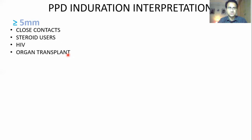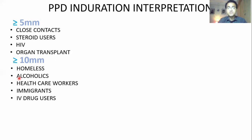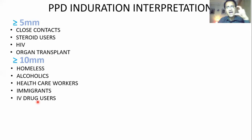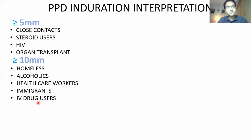Then there is a group in which an induration greater than 10 millimeters will be considered positive. These are patients who are homeless, alcoholics, healthcare workers like doctors and nurses, immigrants, and IV drug users. These are the high-risk group who can be exposed to tuberculosis, and an induration greater than 10 millimeters is considered positive in them.